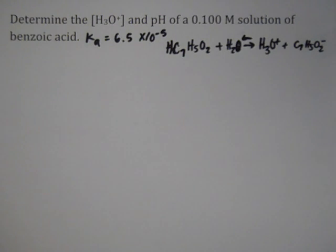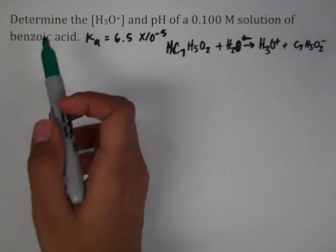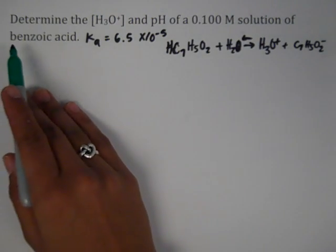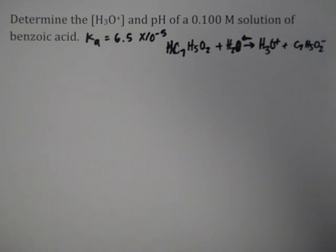This next type of problem is going to be our weak acid problem, and we know that because it's asking us to determine the pH and hydronium concentration of a benzoic acid solution. We know it's not one of our six strong acids, so it has to be a weak acid.